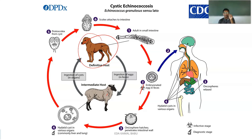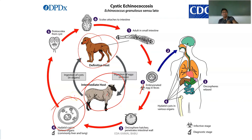The embryonated eggs penetrate the intestinal wall and hatch there, settling down. From the intestinal walls they can reach several organs — the lungs, bones, small intestines, and even the brain — forming hydatid cysts in various organs. In the sheep, the hydatid cyst forms into a protoscolex, which develops into a scolex, attaches to the intestine, grows in the small intestine, and is shed through feces — repeating the life cycle.